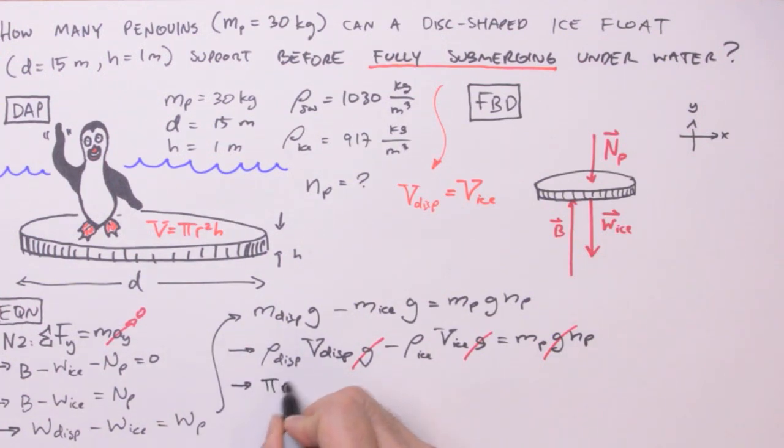So we have pi r squared times h times the density of the displaced fluid, and we're going to go ahead and use the salt water subscript because that is the fluid being displaced here, minus the density of ice equals MPNP. And now all we need to do is divide by the mass of a penguin to get the number of penguins that will perfectly submerge this ice float in the salt water.